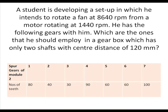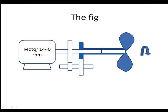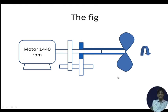A final problem is introduced for self-study: a student wants to rotate a fan at 8640 RPM from a motor at 1440 RPM — nearly a 6× speed increase. He has several gears available and a gearbox with only two shafts with a centre distance of 240 mm. The proposed setup uses two gear stages on these two shafts to achieve the required speed increase. The answer will be discussed in a subsequent lecture.